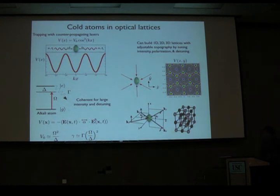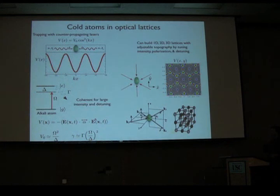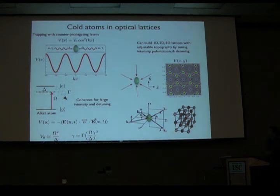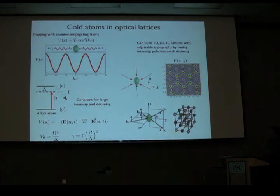Let's look at ways we could actually construct such things. The general idea will be to use atoms or molecules trapped in optical lattices. Optical lattices are just periodic potentials created by interfering standing waves of lasers, via an induced dipole moment on the atoms or molecules. You can do this coherently if you're far off optical resonance, because the coherent shift scales as intensity over detuning, while the incoherent part goes as intensity over detuning squared.